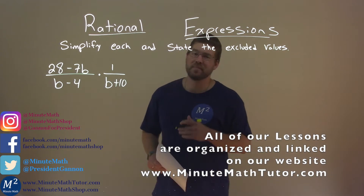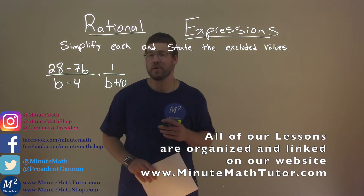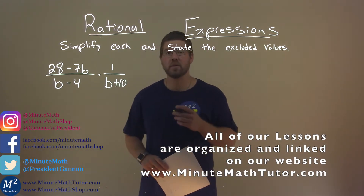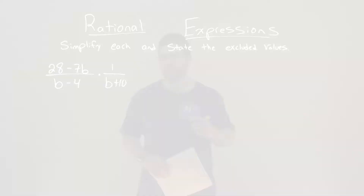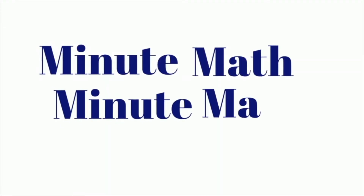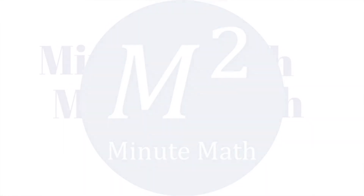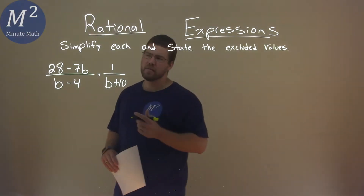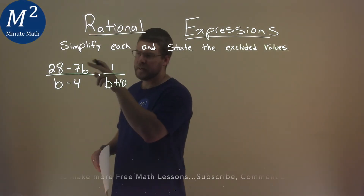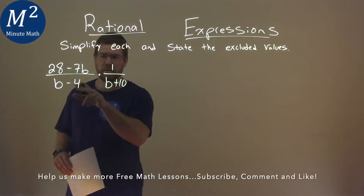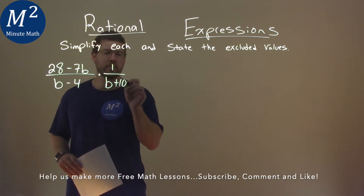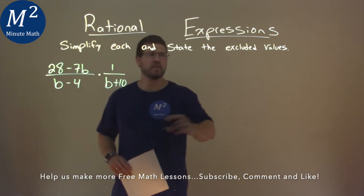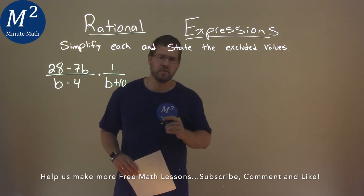Hi, I'm Sean Gannon, and this is Minute Math, and today we're learning about rational expressions. We're given this problem right here: 28 minus 7b over b minus 4, times 1 over b plus 10, and we need to simplify this and state the excluded values.